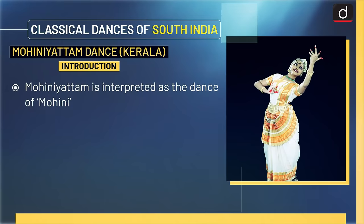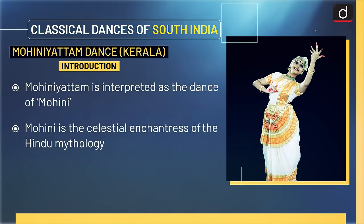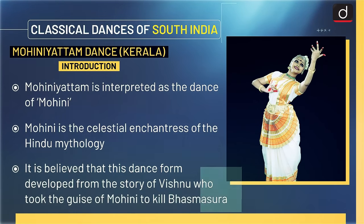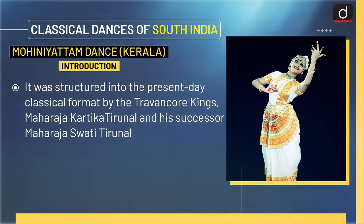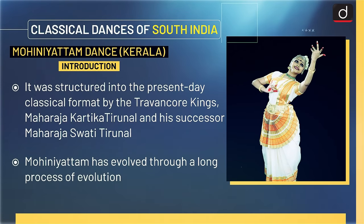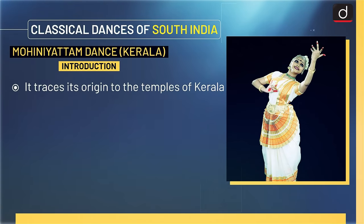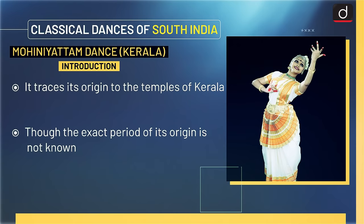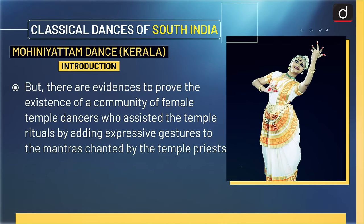Now let's have a look at Mohini Yattam dance from Kerala. Mohini Yattam is interpreted as the dance of Mohini — the celestial enchantress of Hindu mythology. It is believed that this dance form developed from the story of Vishnu, who took the guise of Mohini to kill Bhasmasura. It was structured into the present-day classical format by the Travancore kings, Maharaja Kartika Tirunal and his successor Maharaja Swati Tirunal. It traces its origin to the temples of Kerala, where female temple dancers added expressive gestures to the mantras chanted by the temple priests.